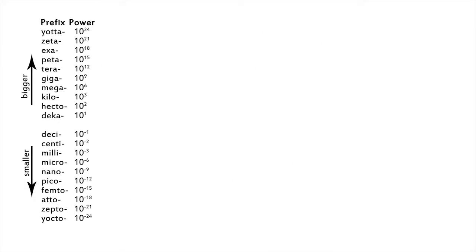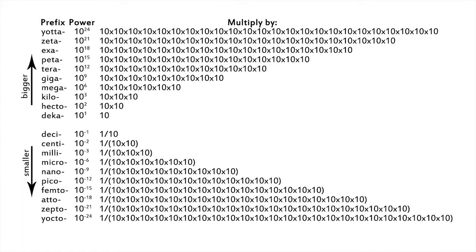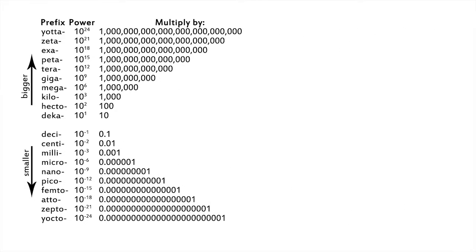The metric prefixes are all based on powers of 10, which means they can be expressed as multiples or fractions of 10, or alternatively as decimal numbers.